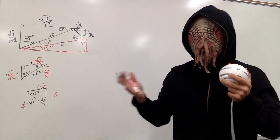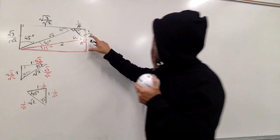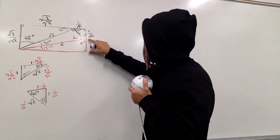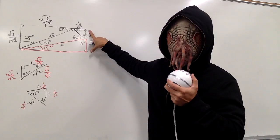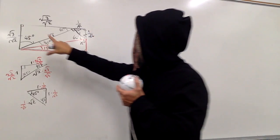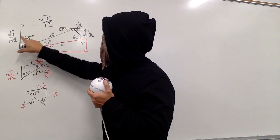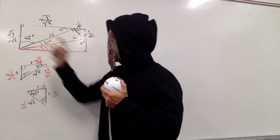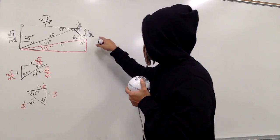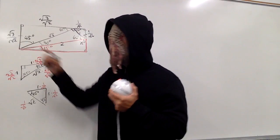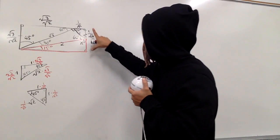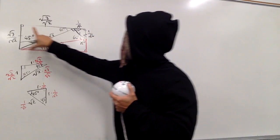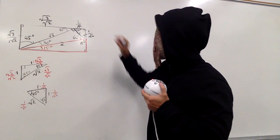How can we figure out this side and that side? Well, the red part is going to be the whole thing. The whole thing is square root of 3 over square root of 2. And that was the reason why I didn't rationalize the denominator, because now they have the same denominator. The red part is just the whole thing minus this.